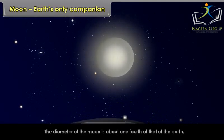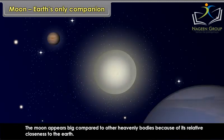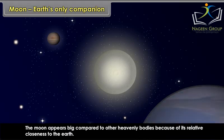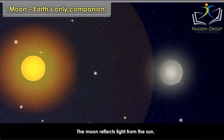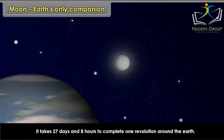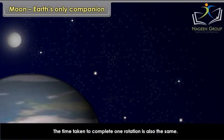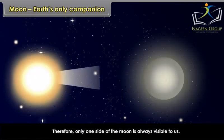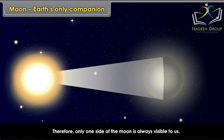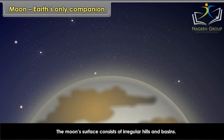Moon is the only satellite of the Earth. The diameter of the Moon is about one-fourth of that of the Earth. The Moon appears big compared to other heavenly bodies because of its relative closeness to the Earth. The Moon reflects light from the Sun. The Moon rotates on an axis and revolves around the Earth, taking 27 days and 8 hours to complete one revolution. The time taken to complete one rotation is also the same, so only one side of the Moon is always visible to us. There is no atmosphere or water on the Moon, and its surface consists of irregular hills and basins with no soil.